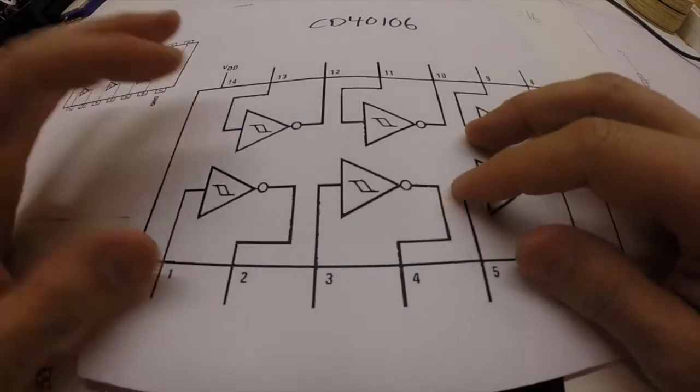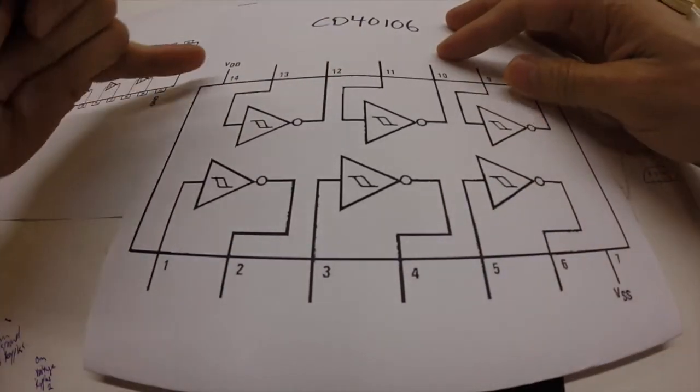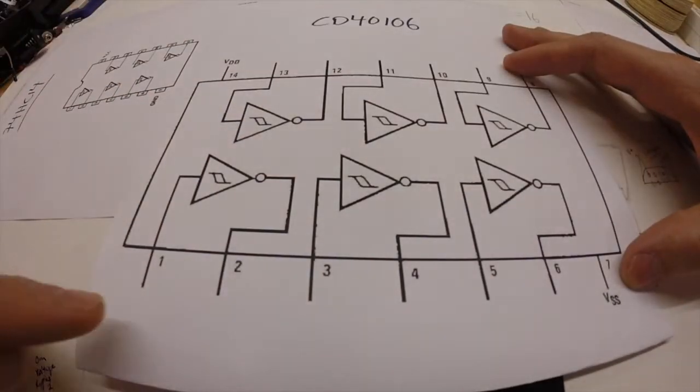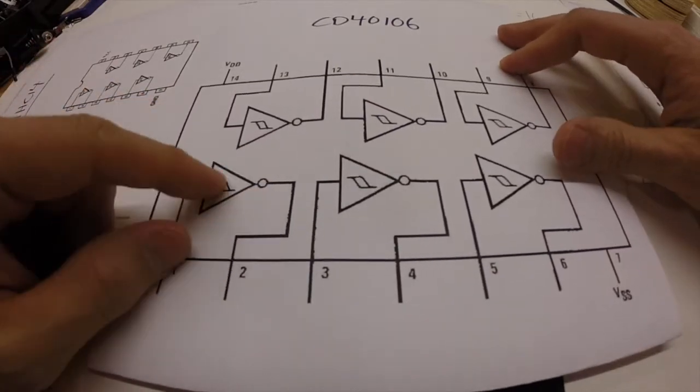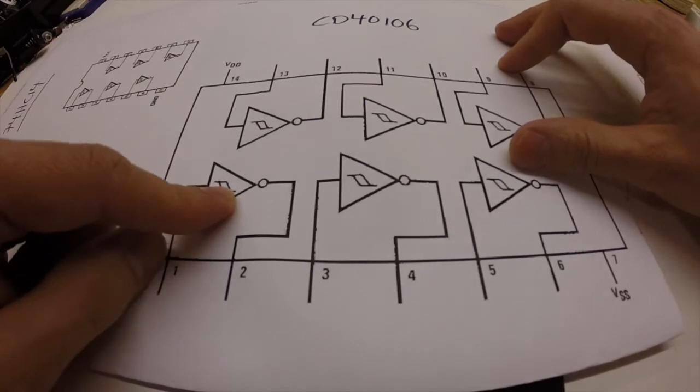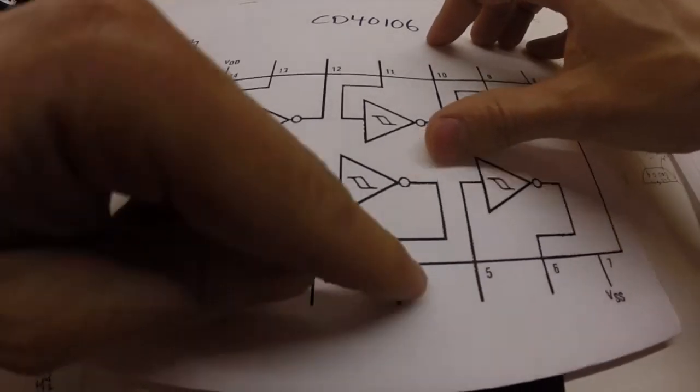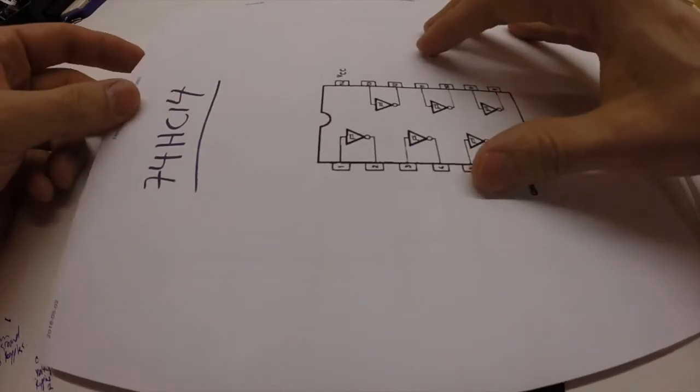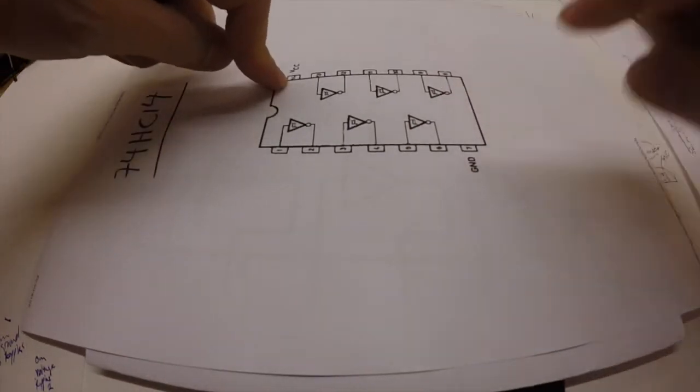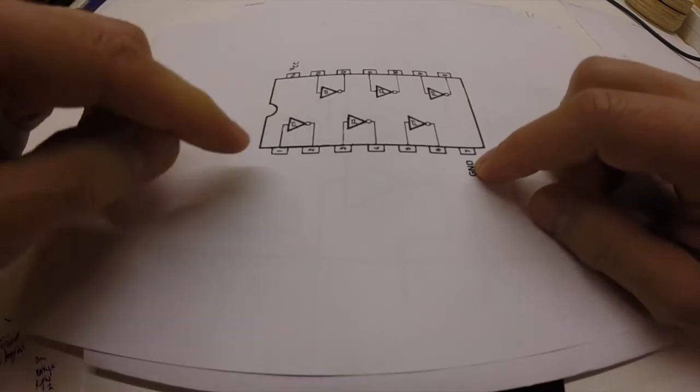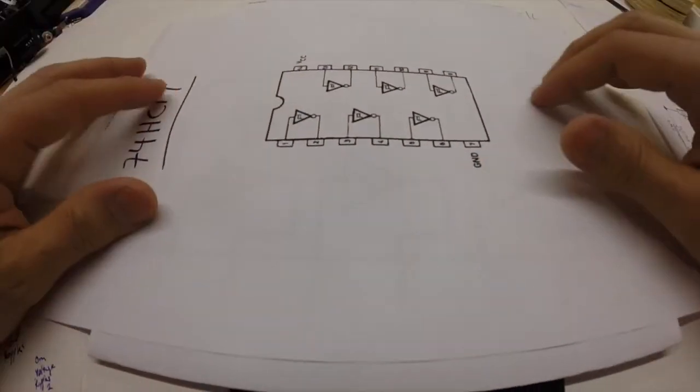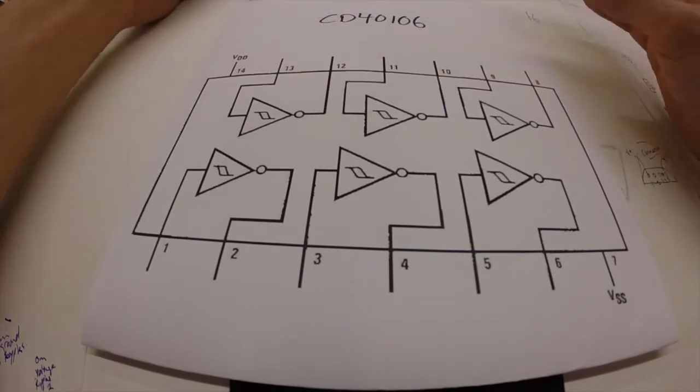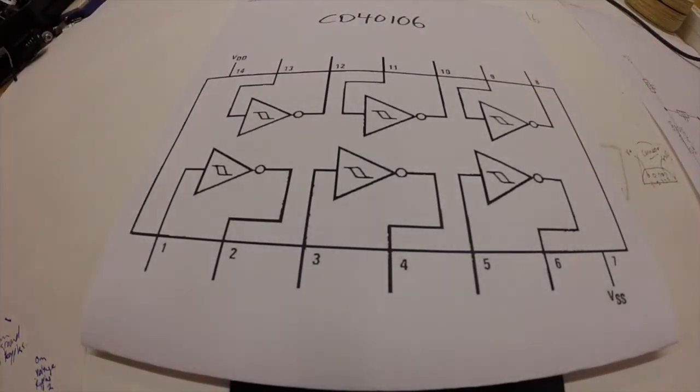So here is the pinout diagram of the CD40106. And we see voltage plus is on pin 14. Voltage minus is on pin 7. And then we have the inverting hex Schmidt triggers between pins 1, 2, 3, 4, 5, 6, 8, 9, 10, 11, 12, 13. And if we look at the 74HC14, voltage plus on pin 14, ground on pin 7, with similar pin configurations. But we're going to use the CD40106.